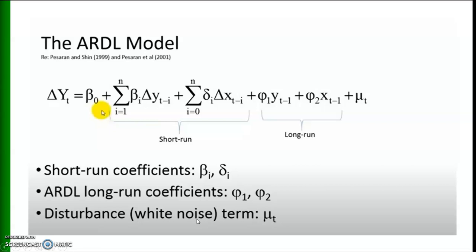Let me show how the ARDL model is written. This is the structure of the ARDL model where the dependent variable is delta yt — the change in yt. The constant is followed by various lagged values of the dependent variable, then lagged values of the independent variable representing the short-run relationship, and finally phi1 and phi2 as long-run terms, plus mu_t, the disturbance or white noise.